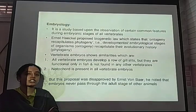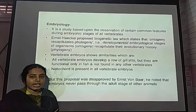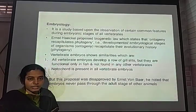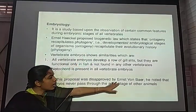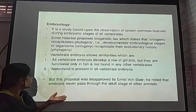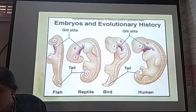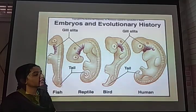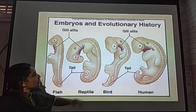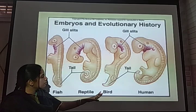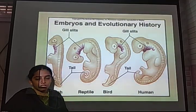Another evidence is embryology, the study of embryos, described by Ernst Haeckel. He used embryological development to study the evolution of organisms. However, this theory was disproved by Ernst von Baer, who noted that embryos never pass through the adult stages of other animals. Haeckel had explained evolution based on embryological study, noting common features among embryos of fish, reptile, bird, and human, including the appearance of gill slits, but this was disproved.